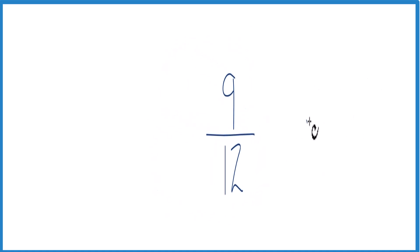So let's take 9 and see how many times 12 goes into 9. 12 doesn't go into 9, but we can call this 90 if we put a 0 and a decimal point up here.